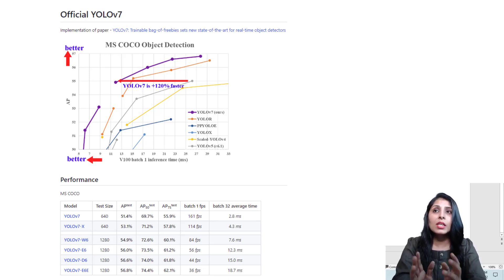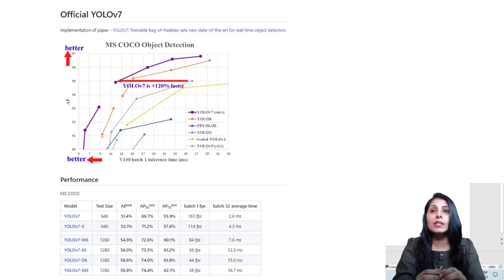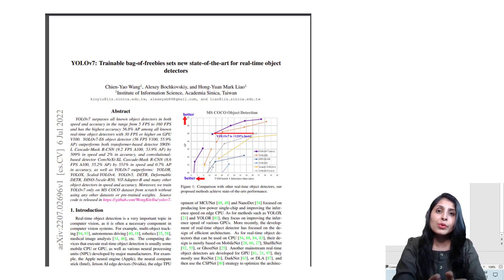This model has the highest accuracy of 56.8% average precision among all known real-time object detectors. You can study the released paper for more details. Today I'll show you how to use the official YOLOv7 on a custom dataset, so let's begin.